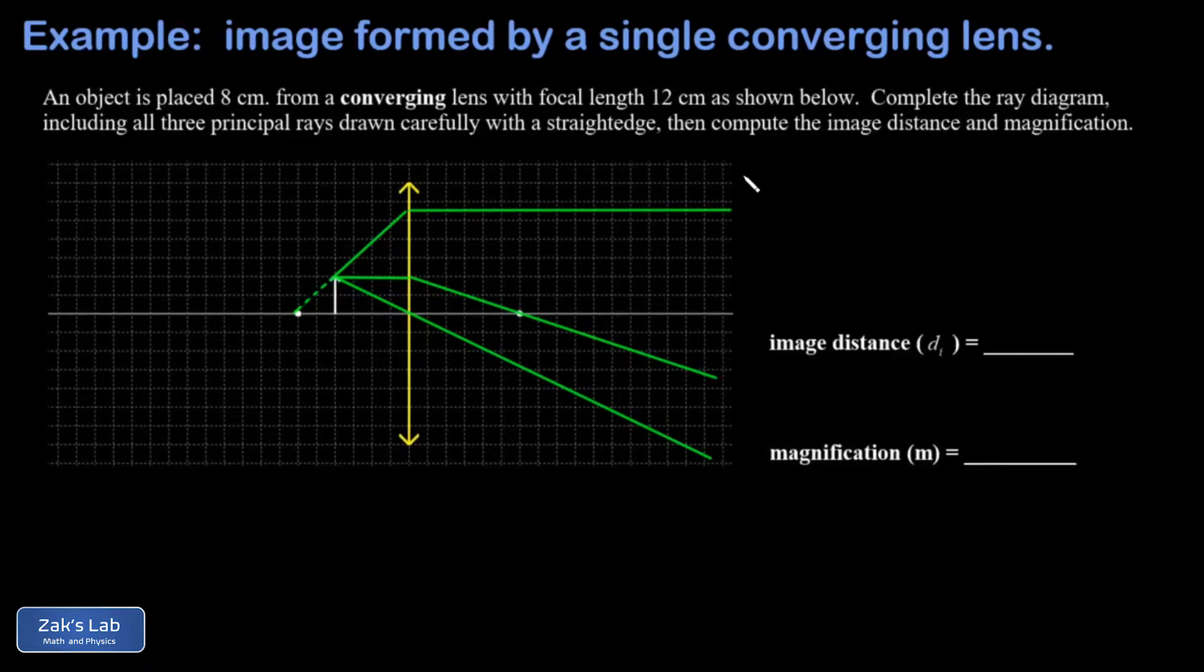So on the right side of this lens, we have three rays that are diverging. And where we perceive the image is where those three diverging rays have a common origin. So we need to trace these back, and we'll get to our virtual image.